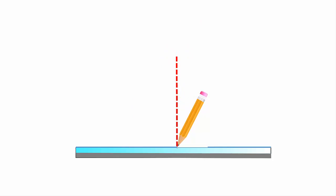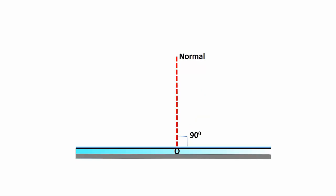So, normal is a line drawn to the surface of the mirror that makes an angle of 90 degrees to the mirror. This line is used as a reference point for all the angles.